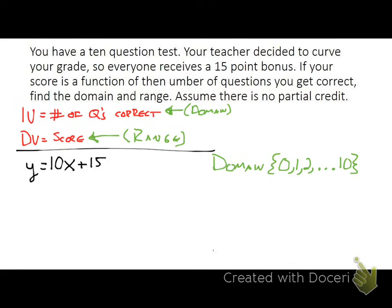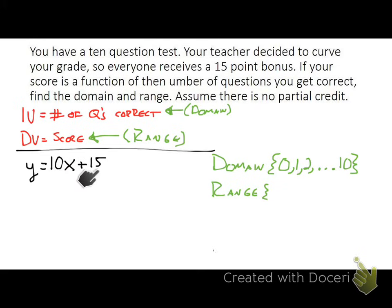Now that we have our domain, we can look at our range. There are two ways to find it. One way: take each domain value, substitute into the function, and get the corresponding range value. For example, putting in 0 gives 10(0) + 15 = 15. Putting in 1 gives 10(1) + 15 = 25. The points go up by 10 each time, and the maximum score is 115, because there's a 15-point bonus added to a perfect score of 100.